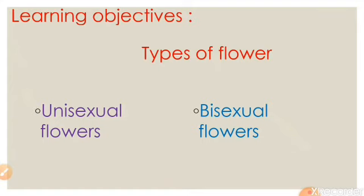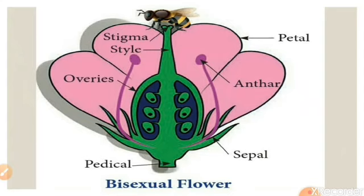If the flower consists of all four parts — calyx, corolla, stamen, and pistil — then it is called a complete flower. Complete flowers are also called bisexual flowers. 'Bi' means two, meaning both male and female parts are present on the same flower.